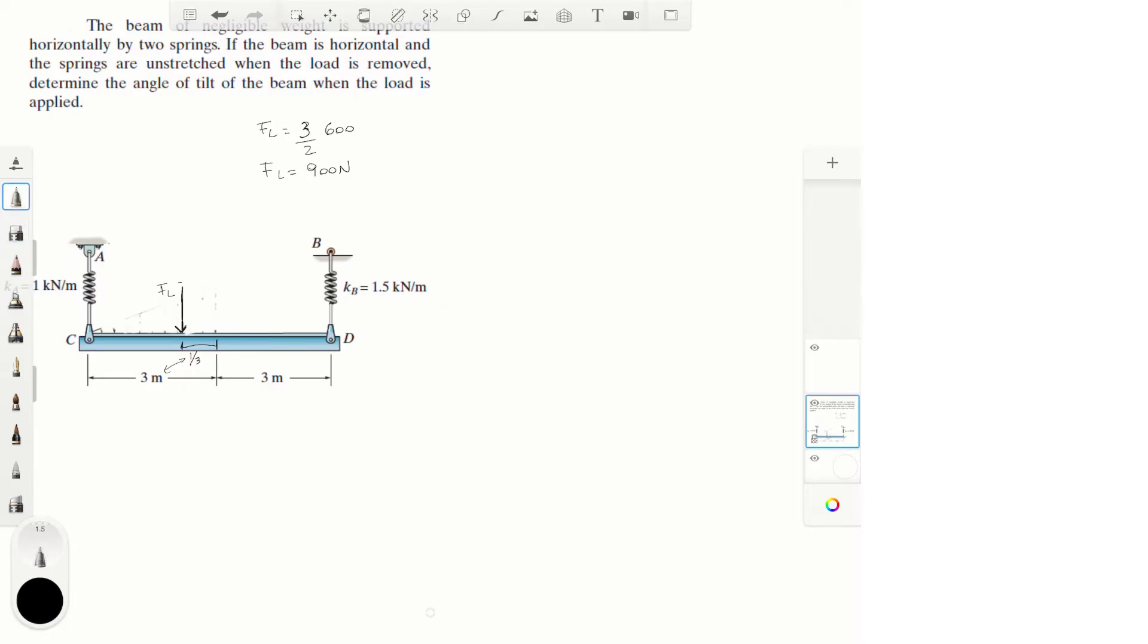So we have F_L is equal to 900 newtons. Whenever you have distributed loads, just try to change them by equivalent resultant forces. That's my advice to you to make the problem simpler. So now that we have the equivalent load,